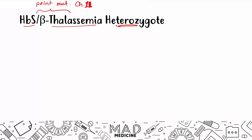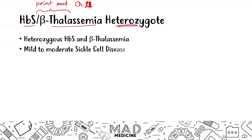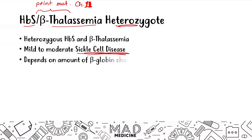In this case, you are going to see mild to moderate sickle cell disease. The reason why is because it's going to depend on the beta globin chain production. If your beta thalassemia is mild, you're going to produce a reduced number of beta globin chains that can produce hemoglobin A1 leading to a mild form of sickle cell. If the beta thalassemia gene is a more aggressive form, it'll lead to a more moderate form of sickle cell disease.